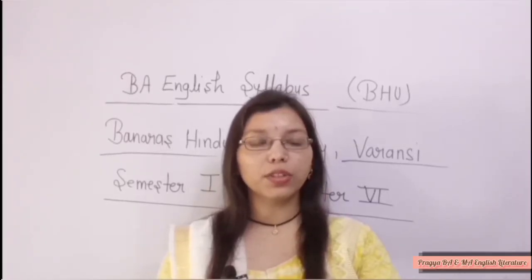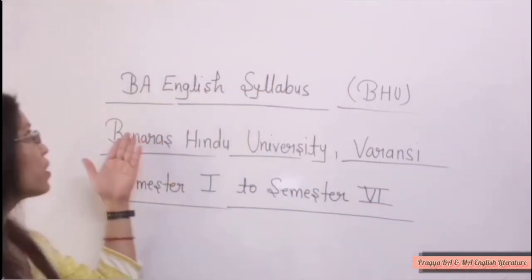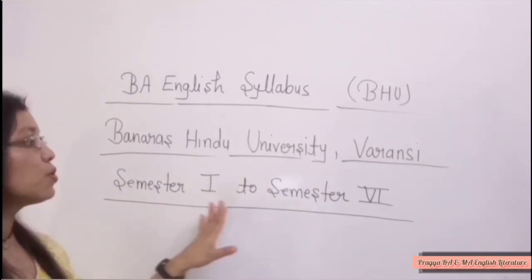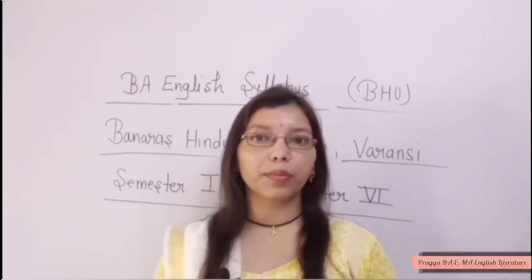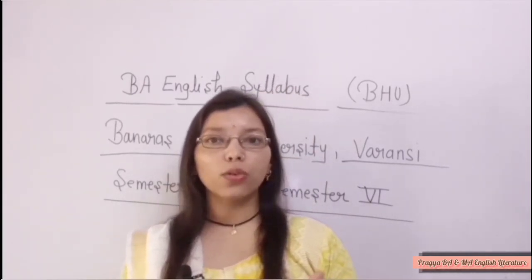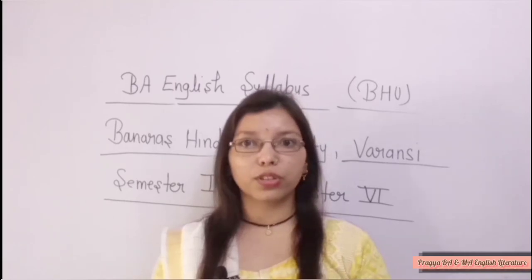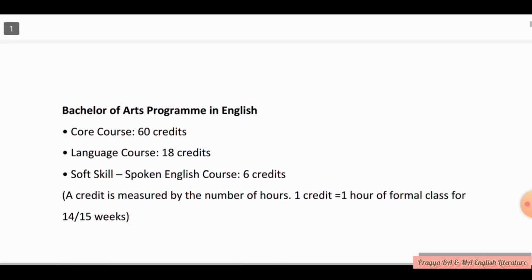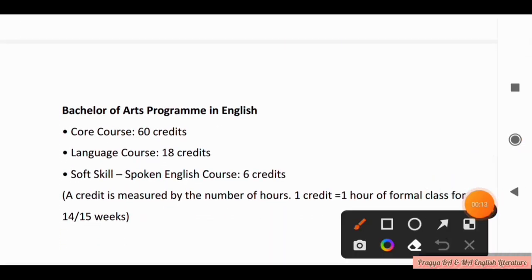So BA English. In this video we will discuss the BA English Syllabus of BHU, Banaras Hindu University. The syllabus covers semester 1st to semester 6th, so there are 6 total semesters. This is Part 2 of the BA English BHU video series; Part 1's link is in the description box. Today we will know about the syllabus of Language Course and Soft Skill.